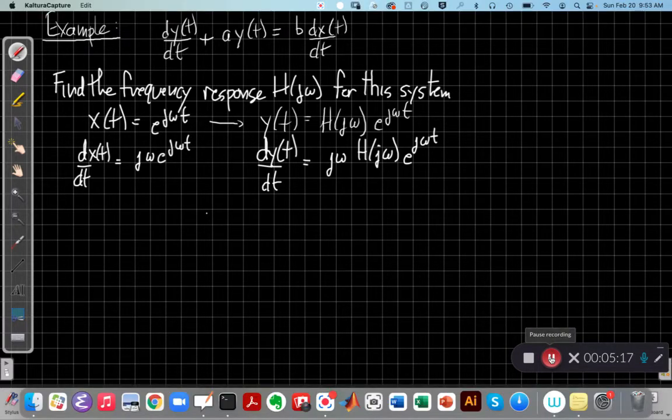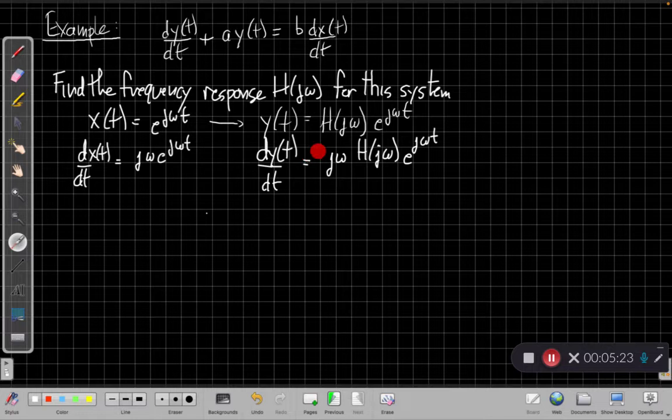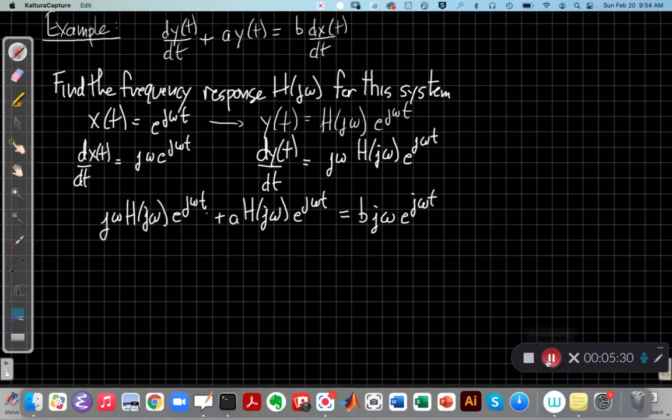So now we have all the terms we need to plug into the differential equation above. I replace dy/dt with what I have here, and then a times y(t) is just a times this, and I replace dx/dt with this thing here. So let me go ahead and do that. Now this is my differential equation for this, assuming that we have this eigenfunction input.